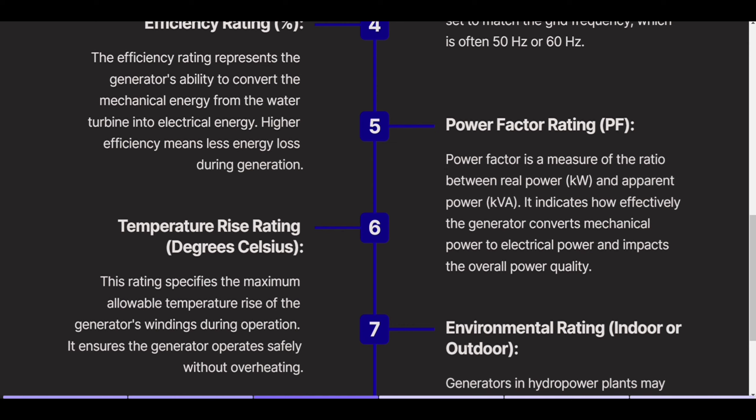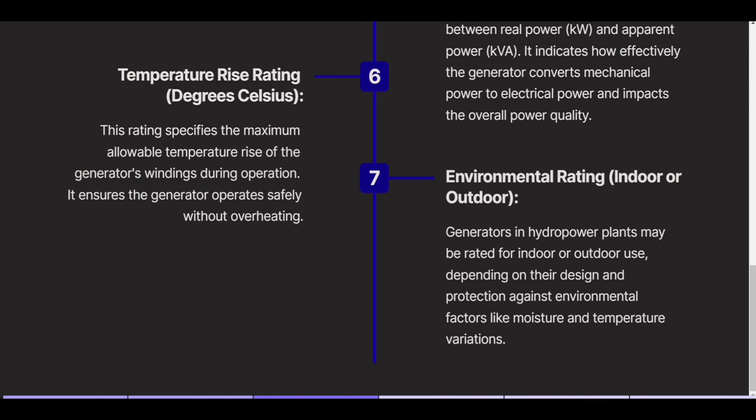Temperature rise rating specifies the maximum allowable temperature rise of the generator's windings during operation, ensuring the generator operates safely without overheating. Environmental rating addresses whether generators in hydropower plants are rated for indoor or outdoor use, depending on their design and protection against environmental factors like moisture and temperature variations.